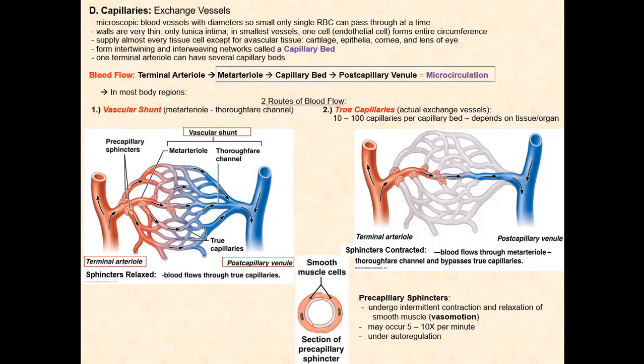The next type of blood vessels are the capillaries, referred to as exchange vessels, because it is at the capillaries where the exchange of substances such as nutrients from blood are given to tissue cells and wastes from tissue cells are given to blood. This includes the exchange of gases — oxygen from blood to tissue cells, and carbon dioxide from tissue cells to blood.